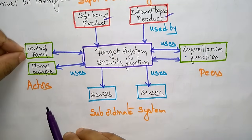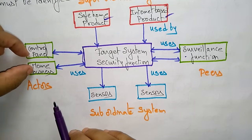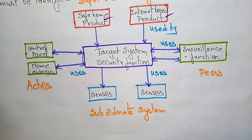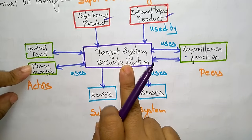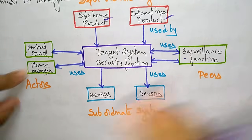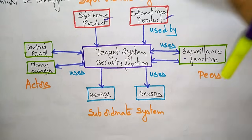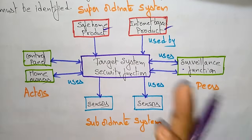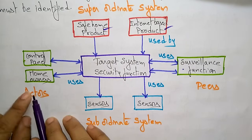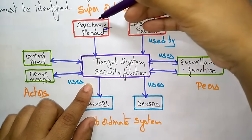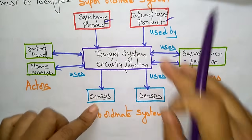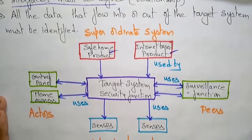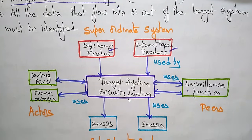The actors are the control panel and the home owners. The control panel is used to monitor everything, and the home owners are responsible for interacting with the sensor inputs. These actors are entities that interact with the target system by producing and consuming information necessary for the request. So the internet-based product and safe home use the target system, and the target system uses the surveillance functions and sensors.